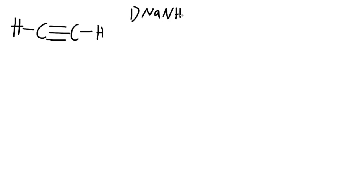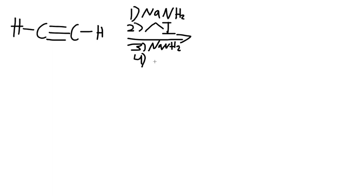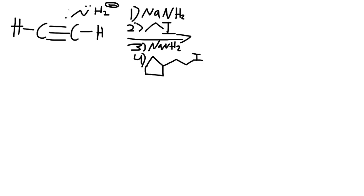Let's do another mechanism. If we have a structure with the same reagents — first NaNH2, second an alkyl halide, third another NaNH2, and fourth another alkyl halide — the first alkyl halide has one, two, three carbons; the second has one and two carbons. Starting with step one: NaNH2 — the sodium Na is a spectator ion. One lone pair on NH2 grabs that terminal hydrogen; the hydrogen gives its electrons to carbon to form a lone pair with a negative charge. NH3 is formed but not important.